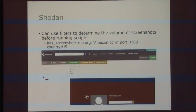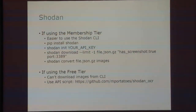As an example, if we're trying to stay within our free tiers, we can use filters. This particular example looks for screenshots in the Amazon Cloud specifically on port 3389 — RDP images — to narrow the search before we run the API. If you're on the membership tier, it's a little easier to use the command line interface. The Shodan CLI is very well documented. If you're on the free tier, you can't use the CLI, so you can use the API script I'm going to provide.